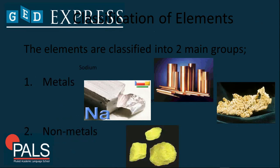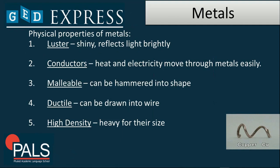For the classification of elements, they can be metals or nonmetals. Metals are mainly those elements found on the left of the periodic table, which includes the transition metals. The physical properties of metals include luster — meaning they are shiny and reflect light brightly — and they are conductors, meaning heat and electricity move through them easily. Metals can also be malleable, meaning they can be hammered into shape, ductile, meaning they can be drawn into wires, and they have high density, meaning they are heavy for their size.